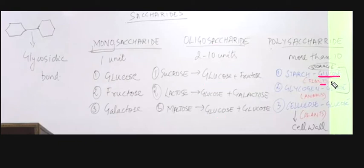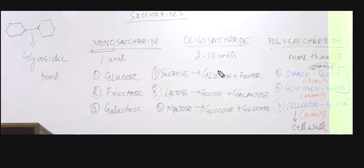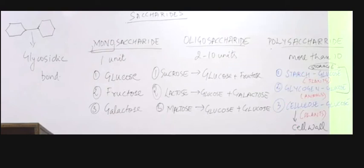Polysaccharide types include starch, made of glucose in plants, glycogen also made of glucose in animals, and cellulose made of glucose in plants. All three are made with glucose. The function of starch and glycogen is storage, and cellulose makes the cell wall of plants. Starch and cellulose are only in plants, and glycogen is only in animals.